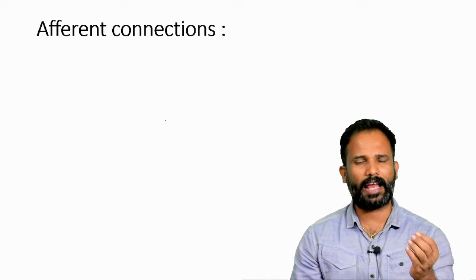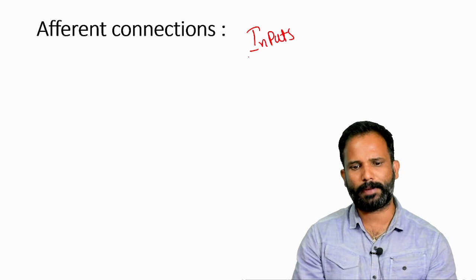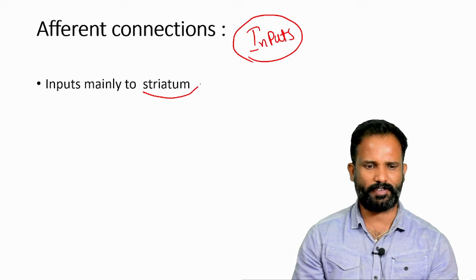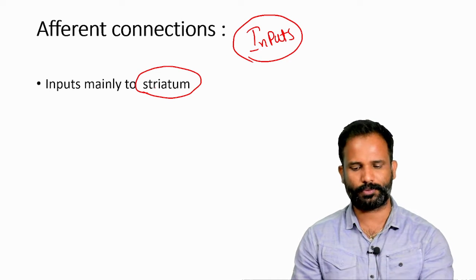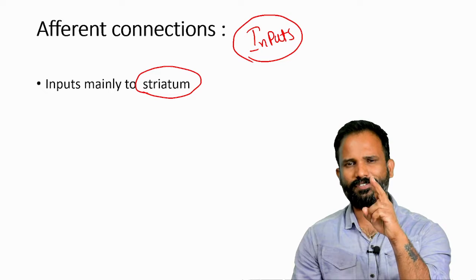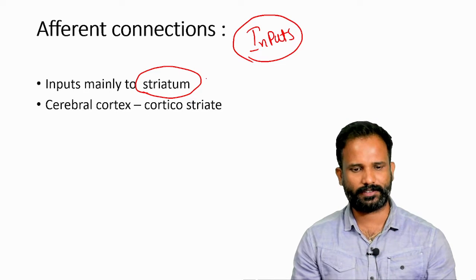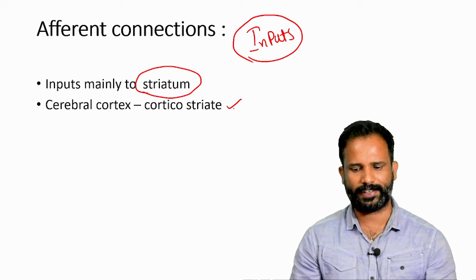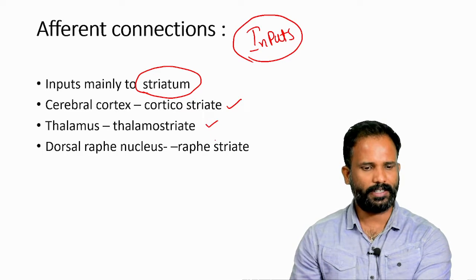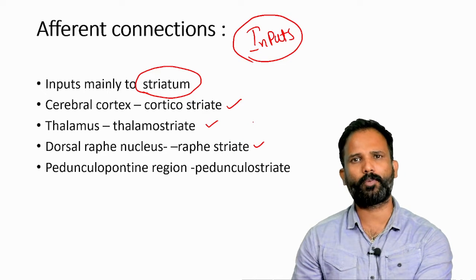Afferent connections are the inputs to the basal ganglia. Inputs mainly occur to the corpus striatum, so the striatum is the main input zone. There are two main sources of input: one is from the cortex, called corticostriate, and the second is from the thalamus, called thalamostriate. Others include from the dorsal raphe nucleus, called raphestriate, and from the pedunculopontine region, called pedunculopontostriate.